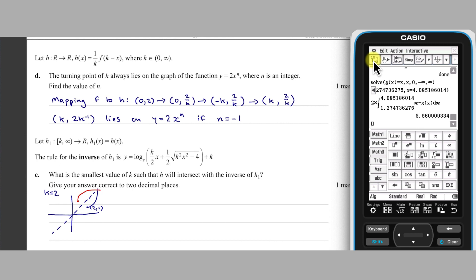However, this is not the only possible graph of H1 and its inverse. As we learned in part D, for smaller values of K, like K equals 1 half, the turning point of H of X will lie closer to the Y axis and higher, so the point will be above the line Y equals X.